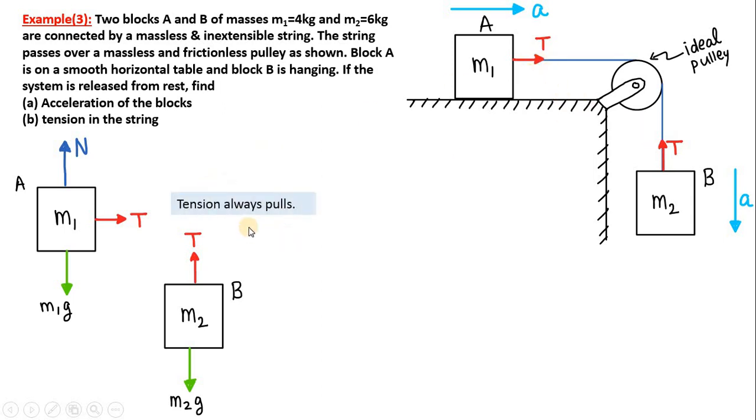The direction of tension force is decided by this simple concept: tension always pulls. So when the string becomes tight, it will pull block M1 to the rightward direction and it will pull block B in the upward direction. Tension always pulls.